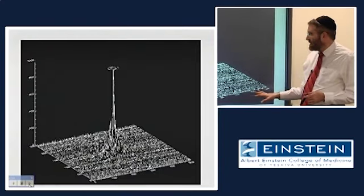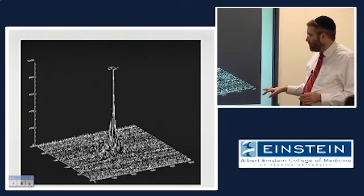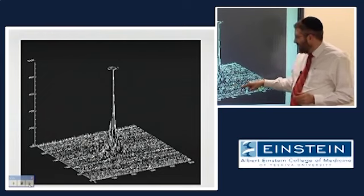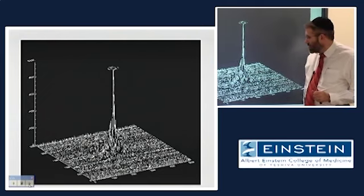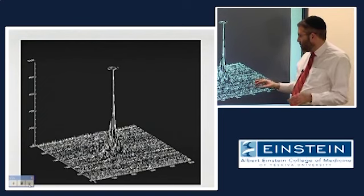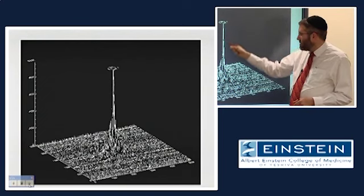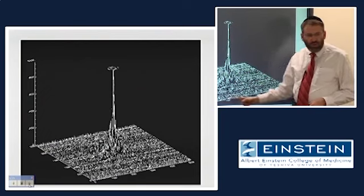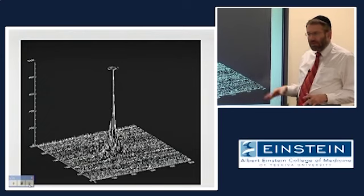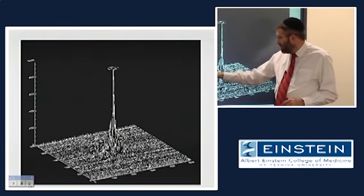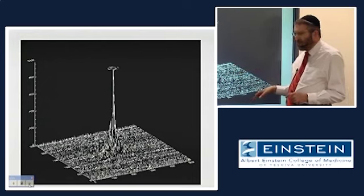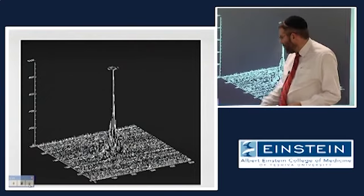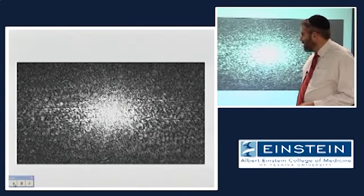This is the same data plotted differently, showing signal amplitude as a 3D plot rather than grayscale. You can see that there's a tremendous amount of signal amplitude in the center and very, very little signal amplitude in most of the periphery. But all of this very low amplitude data out in the periphery actually has a lot of very important information.